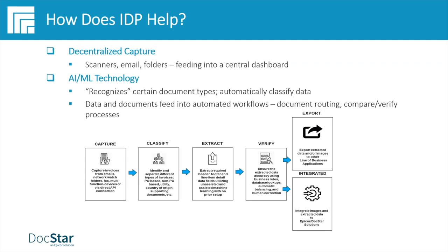For email, the goal is to minimize touch points. The more you can get external parties like vendors sending you documents in email format — specifically the industry standard PDF format — the better. For network folders with electronic documents, you similarly minimize the touch points for getting those into the system.